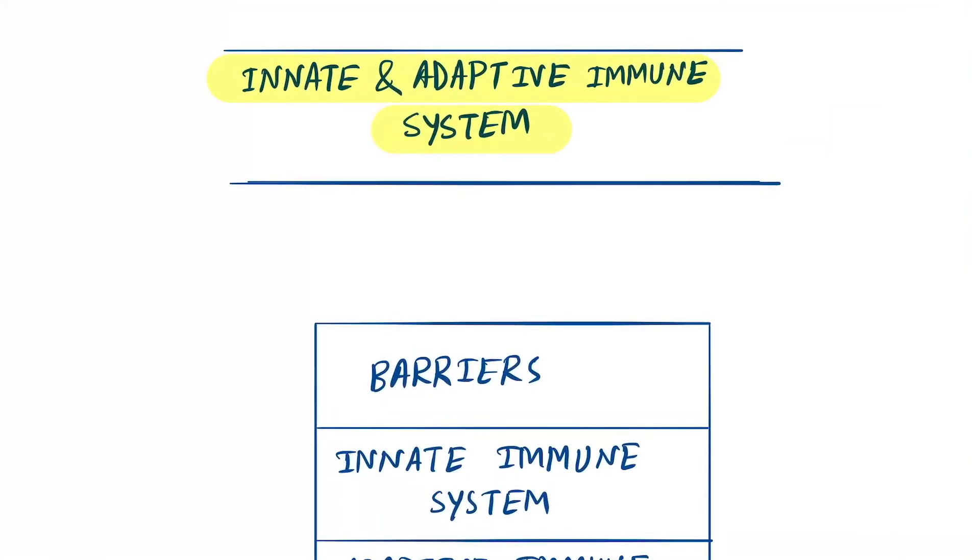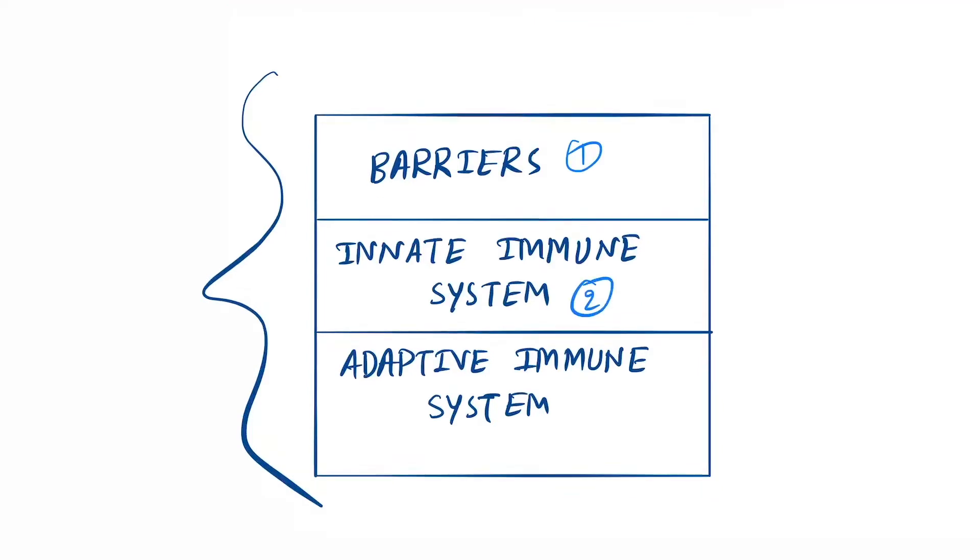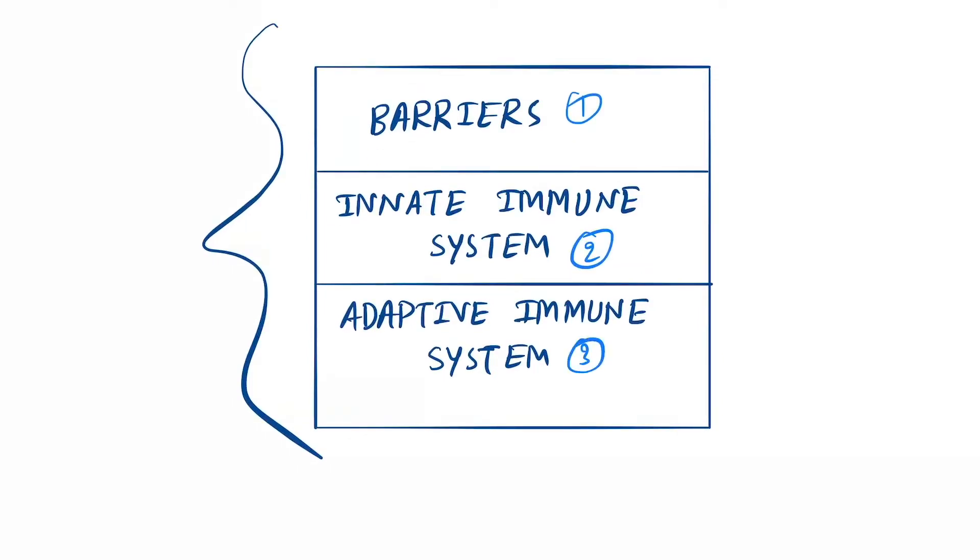Hello friends, today our topic is the innate and adaptive immune system. What are the components of these two systems? As we discussed earlier, in our body there is first the barrier, next is the innate immune system, and third is the adaptive immune system. We discussed this in the basics of immunology lecture.